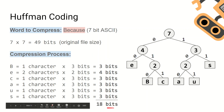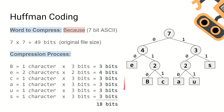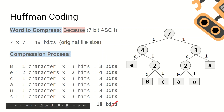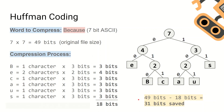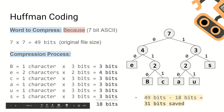To work out how much data we have saved, we subtract the compressed file size from the original file size. 'Because' has an original file size of 49 bits and a compressed file size of 18 bits. So we do 49 take away 18, which gives us 31 bits saved.